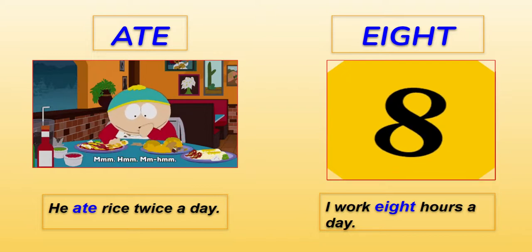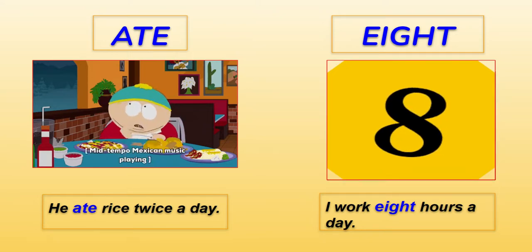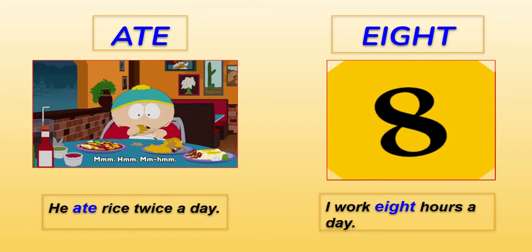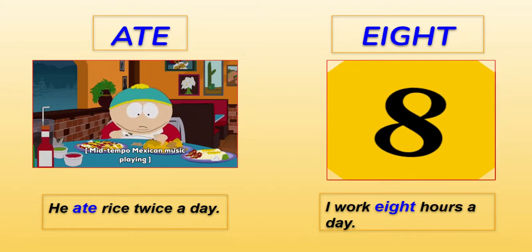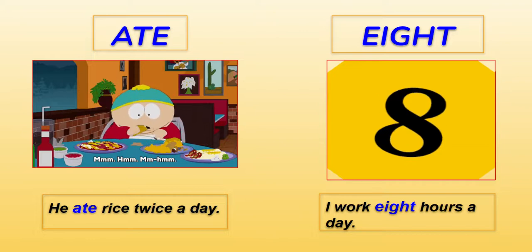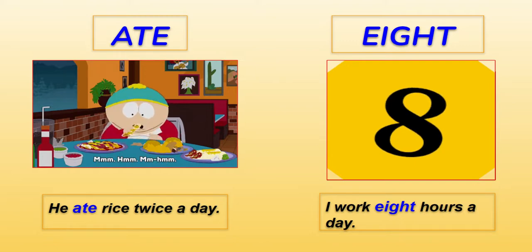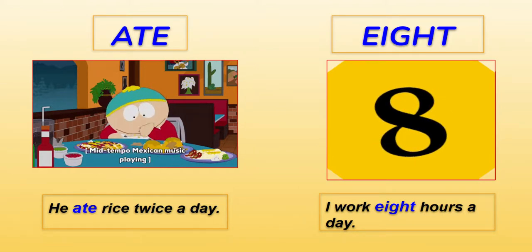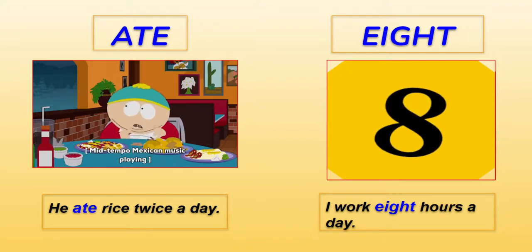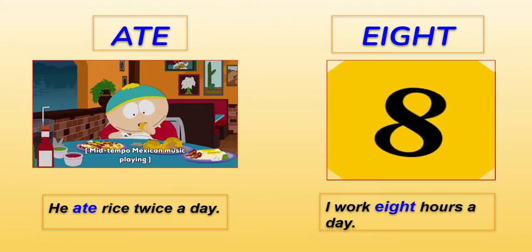The pronunciation of 'ate' and 'eight' is so identical, but the meaning is different. A-T-E is the past tense of 'eat' — 'He ate all the food.' E-I-G-H-T is the number eight — 'I work eight hours a day.' So A-T-E is past tense of eat, and E-I-G-H-T is the number.